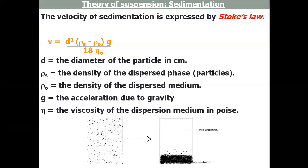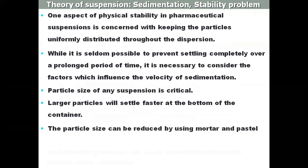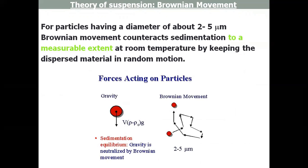Particles having a diameter of about 2 to 5 micrometers—the particle is under the influence of gravitational force. With this diameter, there is Brownian movement, constant movement which can counteract sedimentation to a measurable extent at room temperature by keeping the dispersed material in random motion. The particles falling because of gravitational force can be neutralized by having Brownian movement at room temperature.